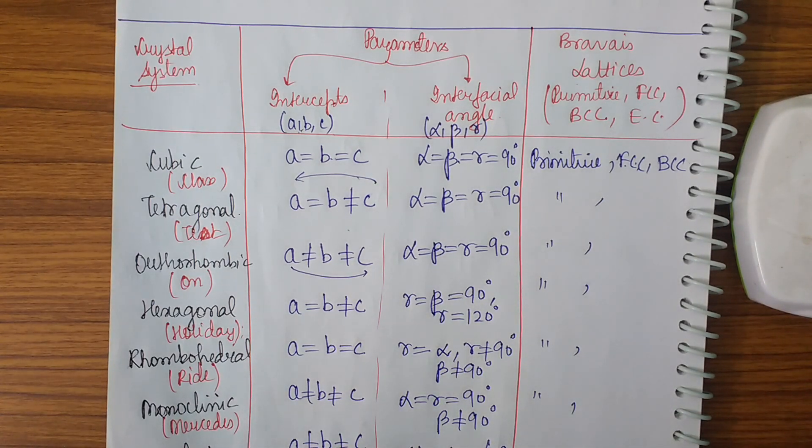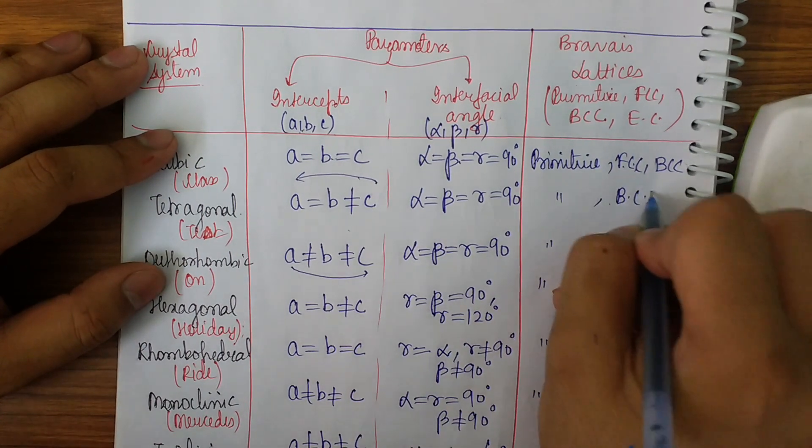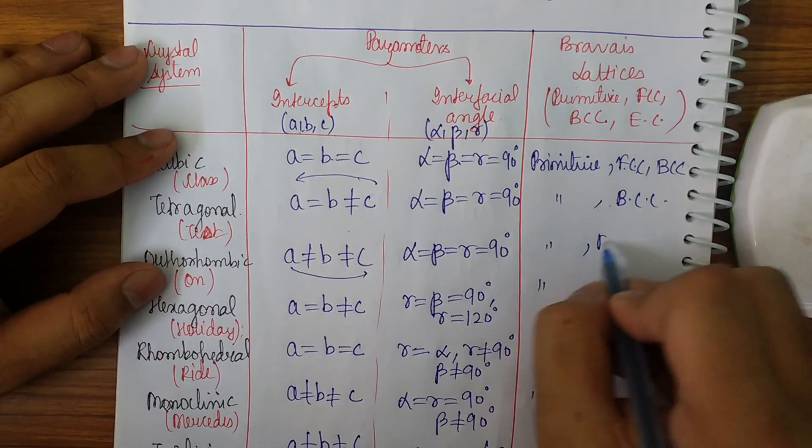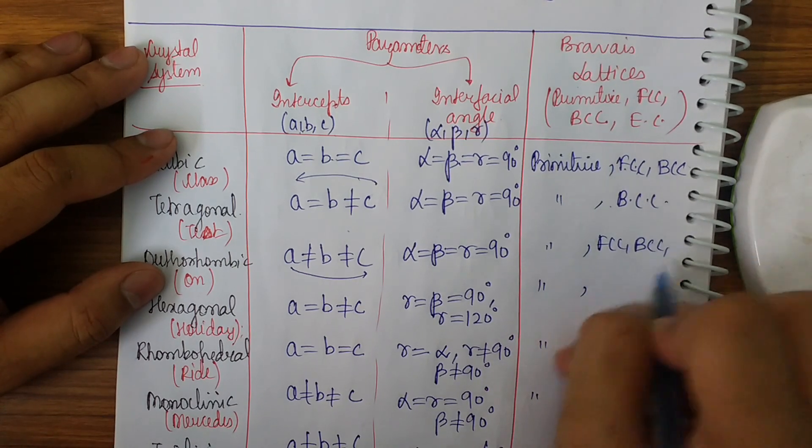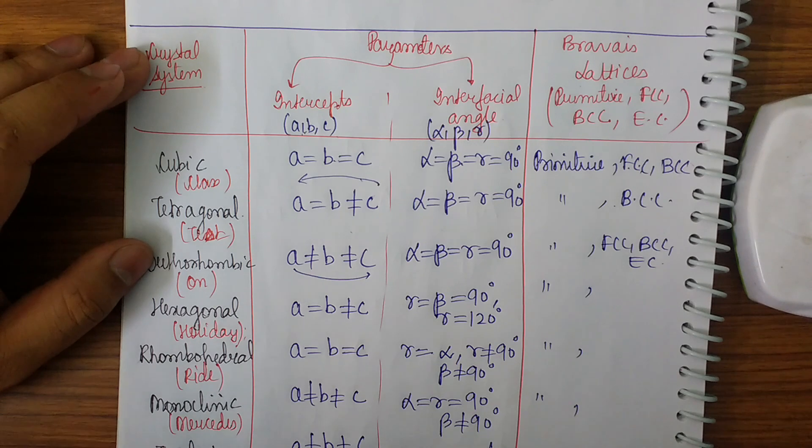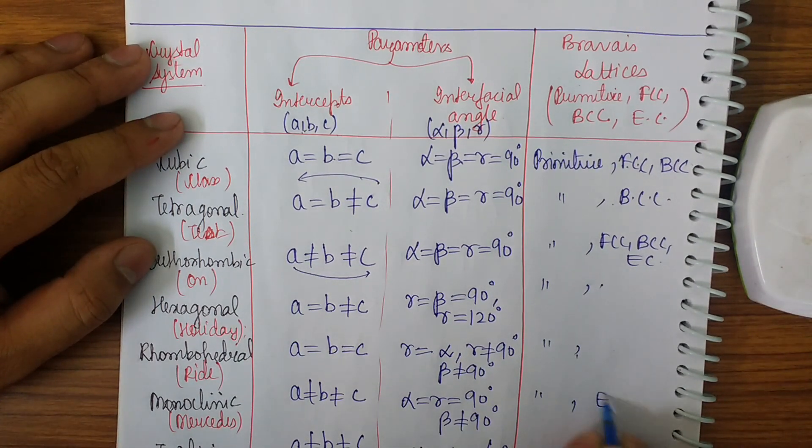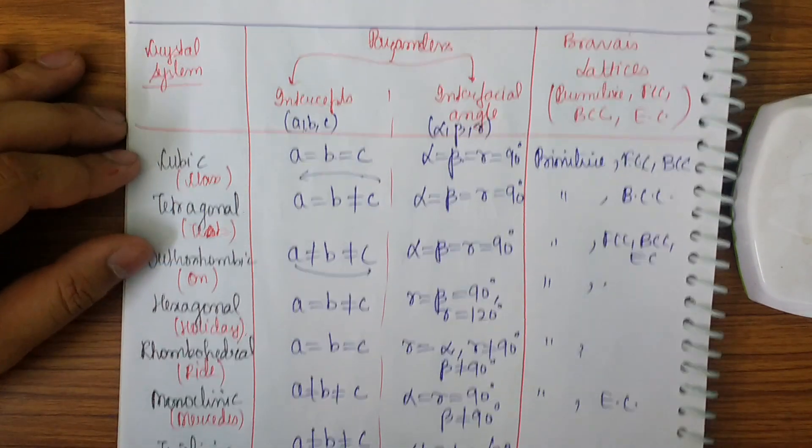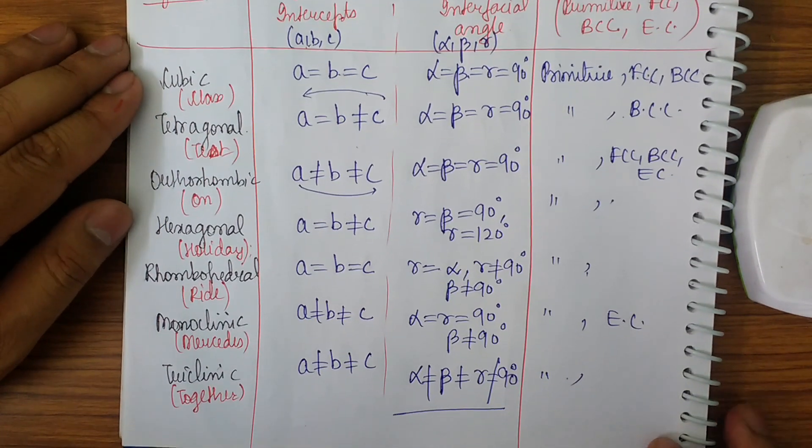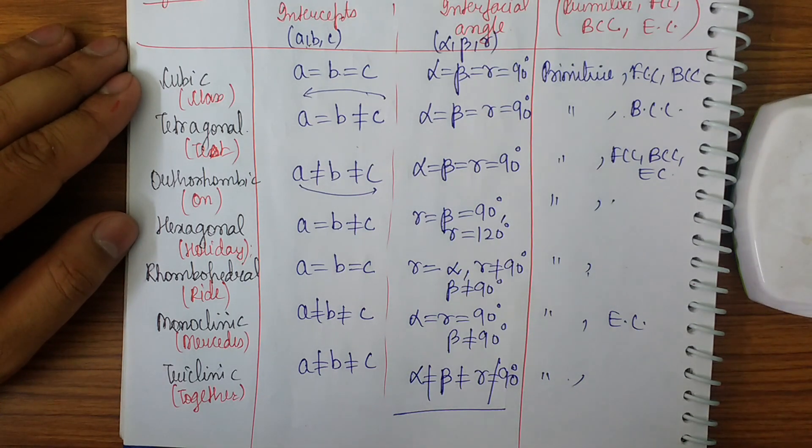Now let's get to the next one. This will be only primitive and along with BCC. The next one will be FCC, BCC, and end center also. So this one is the most important that I can say. Now primitive, primitive and end center. This will be the basic arrangement of the Bravais lattice, that is primitive, FCC, BCC, and EC. So in the next video I shall be taking the various cubic cells and discuss a lot on them.